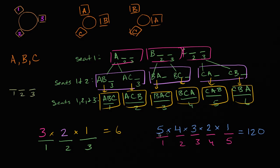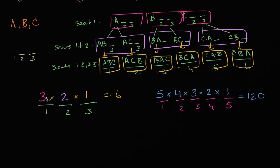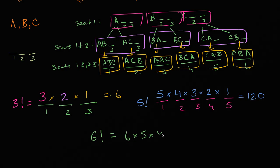If you're wondering — this is a neat mathematical operation: three times two times one, or five times four times three times two times one. When you start with a number and multiply it by each successive integer down to one, this operation has already been defined. It's called the factorial. Three times two times one is three factorial, written with an exclamation mark. Five times four times three times two times one is five factorial. In general, six factorial would equal six times five times four times three times two times one.